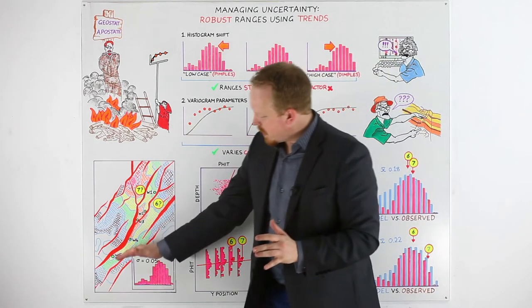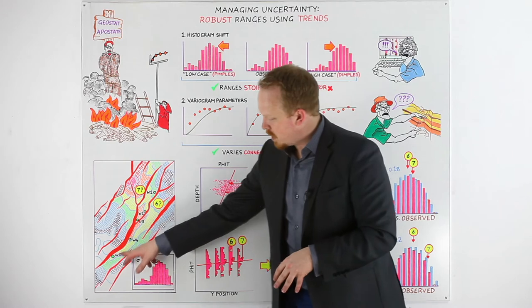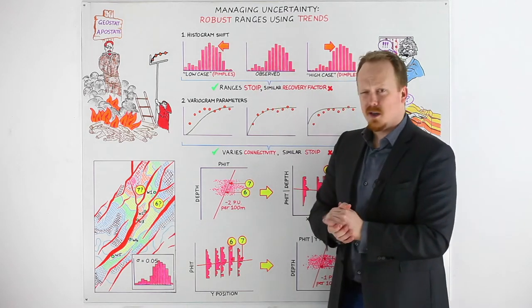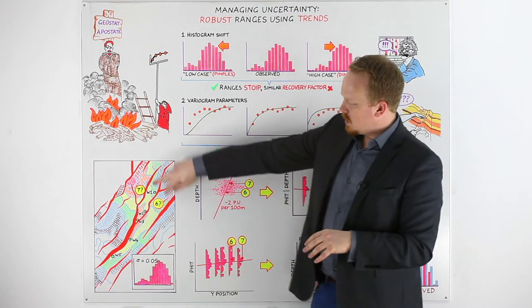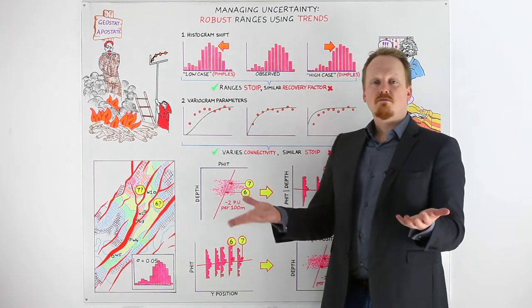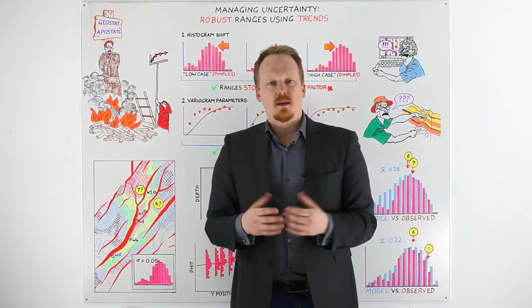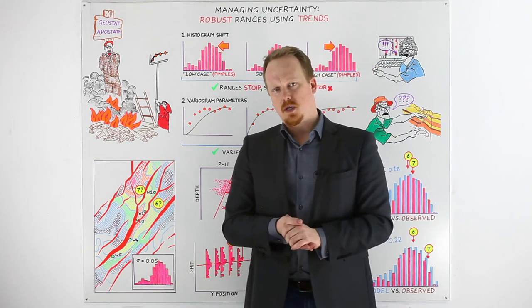Got an example here, a top structure map of a field, a real field through here with five appraisal wells along with the structure. And the question is in these two other locations that are going to get drilled, is it going to be similar, different, better, worse? And how could we investigate the uncertainty of the outcome on those locations?